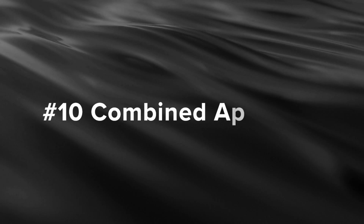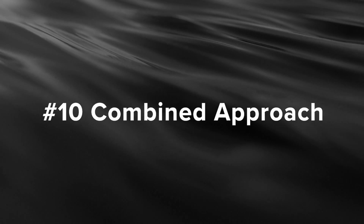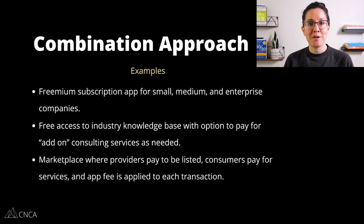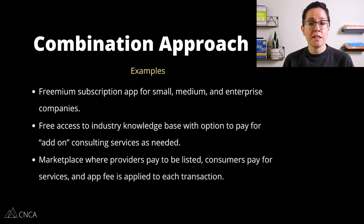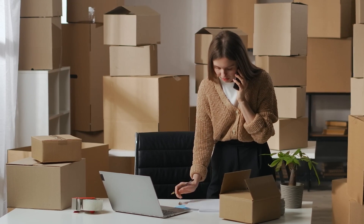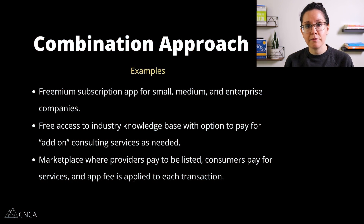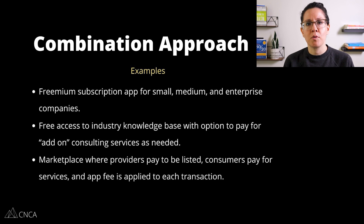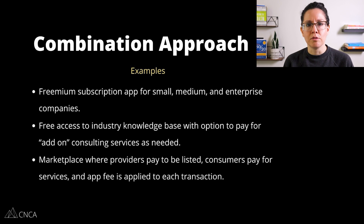Finally, you can always use a combined approach. Every single app is going to be different, offering unique features and capabilities, so there may not be a one-size-fits-all solution. You might need to put together a couple of the approaches we've talked about. For example, if you have a freemium approach but your users are of various sizes — individuals, small businesses, or large enterprise organizations — you can offer many different pricing tiers depending on the type of user, and they pay to upgrade to the appropriate tier.